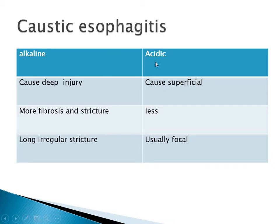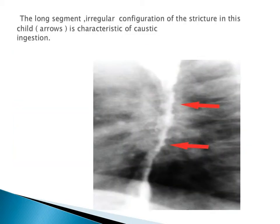Caustic esophagitis has alkaline and acidic causes. Alkaline causes deep injury while acidic causes superficial injury. Alkaline causes more fibrosis and stricture, but acidic causes less and is much milder. Alkaline most commonly results from battery ingestion, which leaks alkaline material into the surrounding tissue, causing deep injury and long irregular strictures. This case of caustic ingestion shows a long irregular stricture, characteristic of alkaline ingestion.